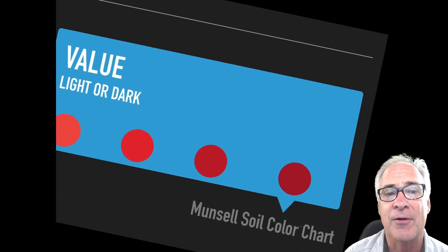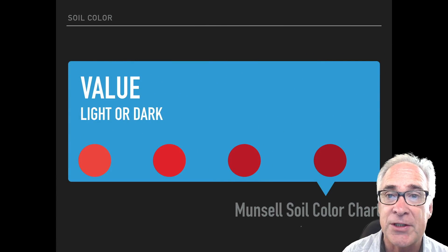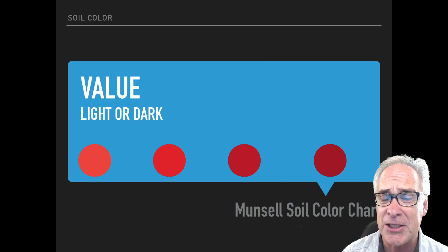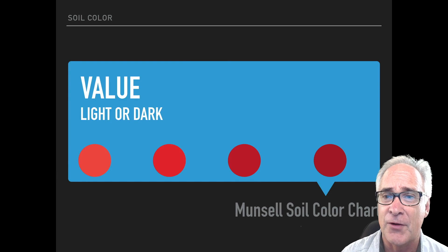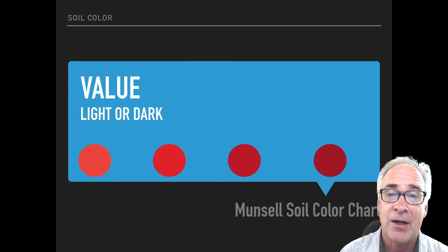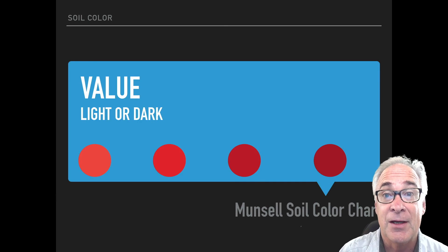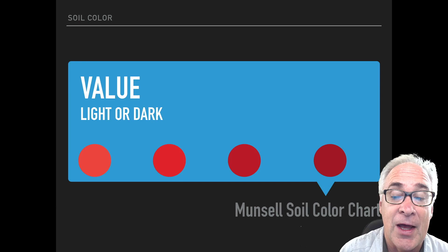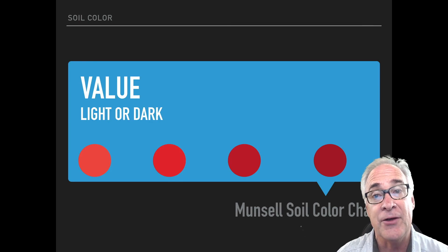The second component of color is its value. Is it light or is it dark? I know that's a simplistic term, but it does help explain things. If you go to the right or the left of the chart, you'll notice in this chart that the one on the far left, as you're viewing it, is lighter in color — a lighter red — and as you move up, it gets darker and darker.